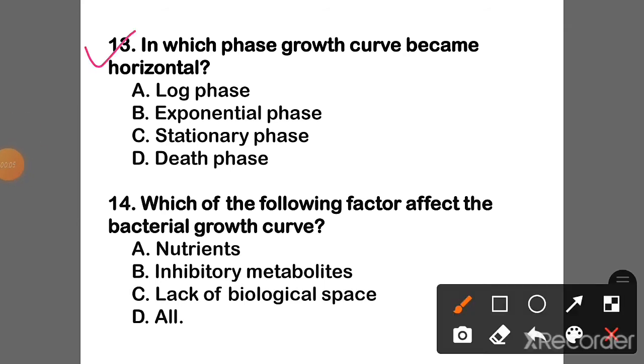Question 13: In which phase does growth become horizontal? The correct answer is Option C — Stationary phase.